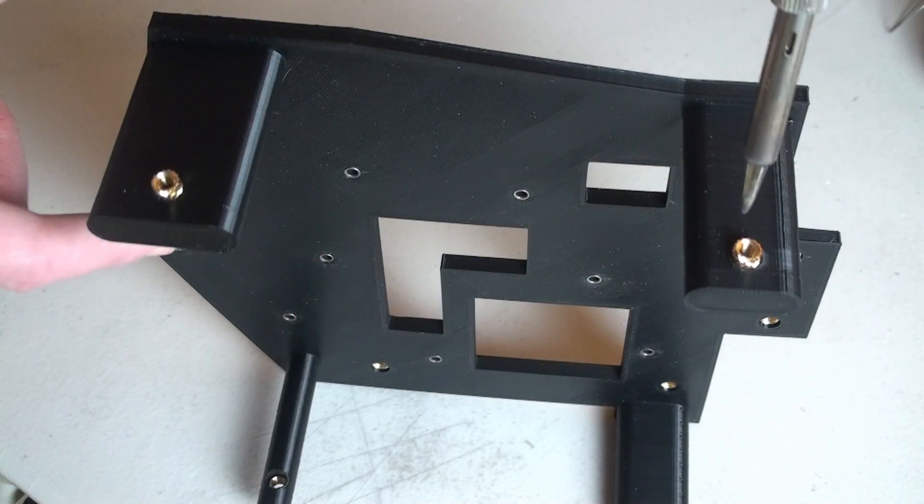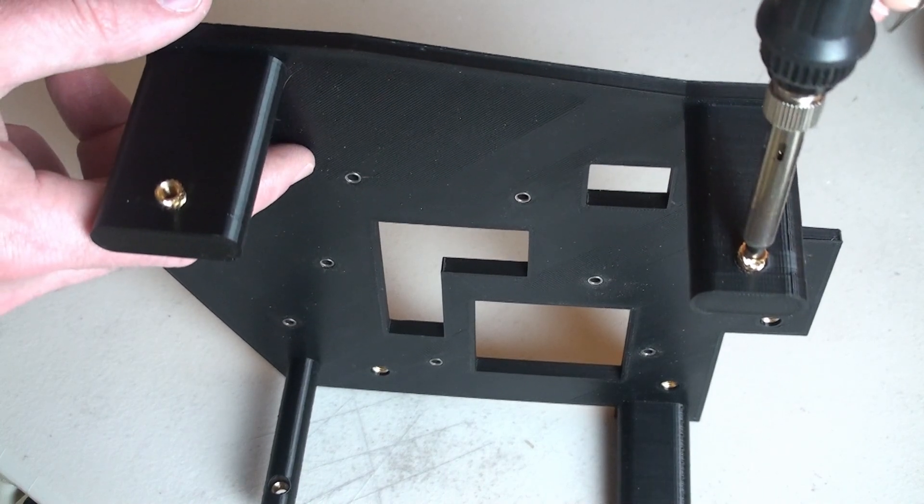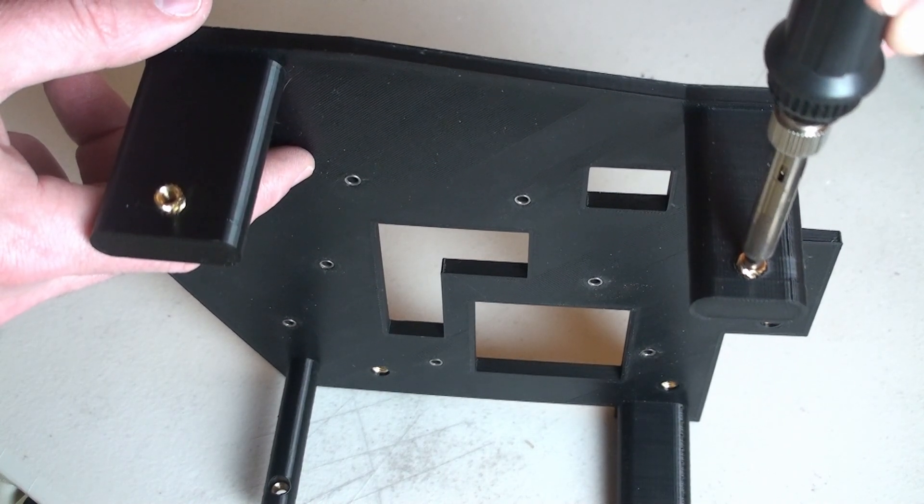For the knurled inserts, those simply need set in place over their respective holes. Then, with a soldering iron, you can melt them into place. As they cool, they'll latch onto that plastic and provide the support you're looking for.